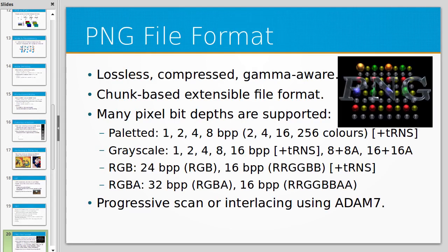PNG is lossless and compressed. It's a chunk-based system where you can add extra informational chunks — one of which stores gamma information used to encode the image, unlike GIF which is blissfully unaware of gamma. PNG supports many pixel formats: paletted, grayscale, RGB, and RGBA, as well as various bit depths including 16 bits per channel, 24 bits per pixel, and 32 bits per pixel.